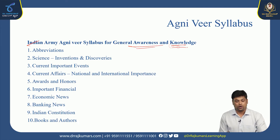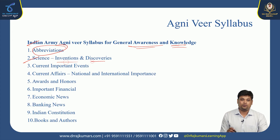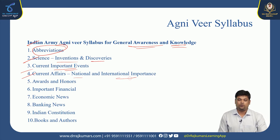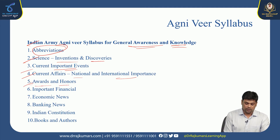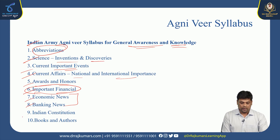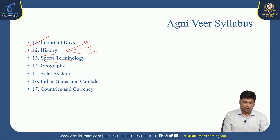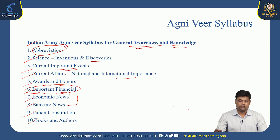Next is general awareness and general knowledge. Abbreviations — all major abbreviations related to different subjects as well as international organizations and associations. Science — inventions and discoveries from old times to the new period. Current important events and current affairs, both national and international. Awards and honours, important financial, economy and banking news, Indian constitution, popular books and authors, important days in the calendar, history — ancient, medieval and modern — sports terminologies, geography, solar system, Indian states and their capitals, and countries and their currencies.